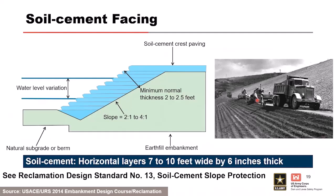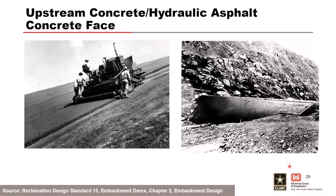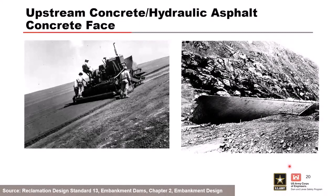If you need a really thick lift for protection, your construction documents and specs must require treating those lifts as construction joints — spraying high-pressure water to expose aggregate for a good bond between lifts. Photos of Montgomery Dam and Upper Blue River Dam in Colorado show asphalt paving up and down the upstream slope — it's a different mix from highway asphalt. Placed in a cold climate, that's a bit problematic for cracking, but it was determined to be more cost effective.